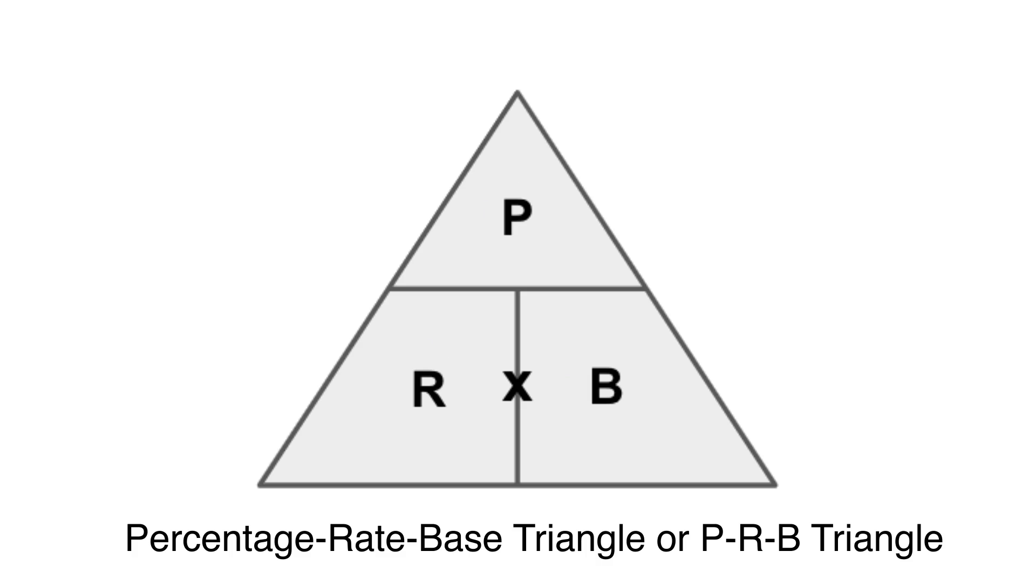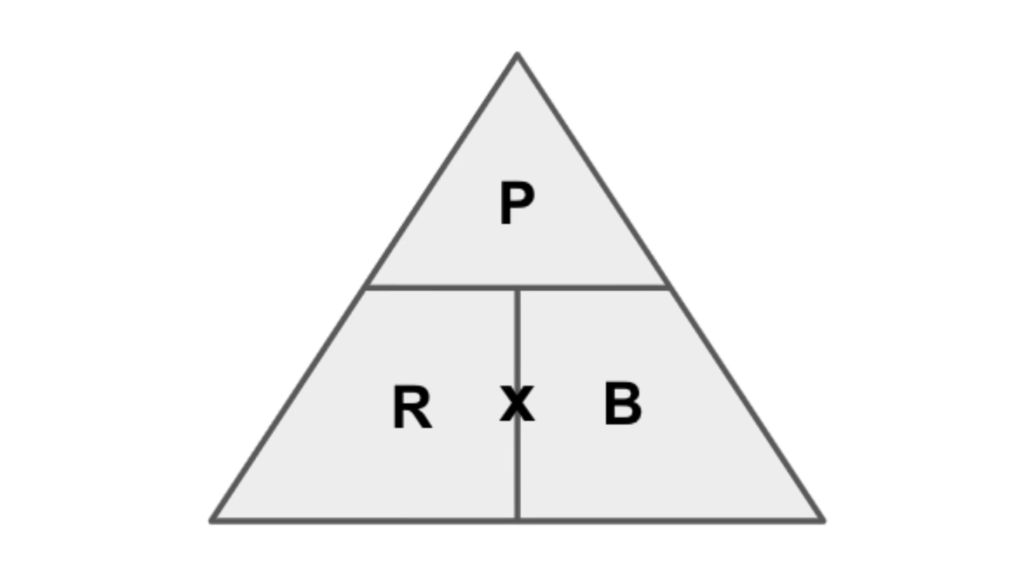Take note that between the base and the rate, we place a multiplication symbol. In using the PRB triangle, we cover the letter of the value that we need to solve. For example, let's say we are looking for the base.